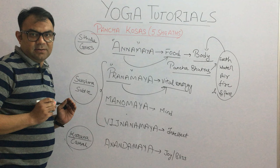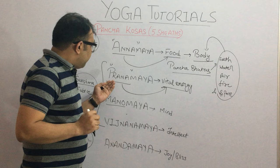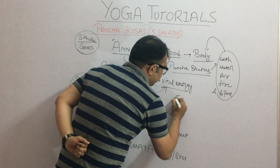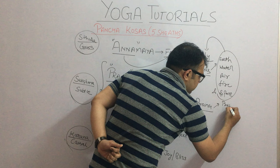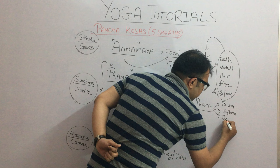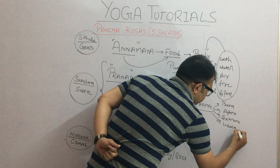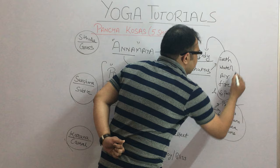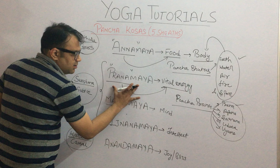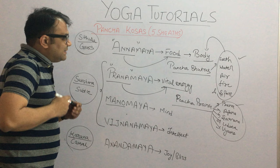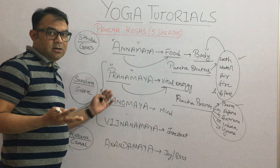Prana comes under the Pancha Pranas — there are five types of Prana: Prana, Apana, Samana, Udana, and Vyana. We will study these Pranas and the Panchabhutas in further videos. So the second sheath of life is the Pranamaya Kosha — vital energy — and it is Prana that executes this body.